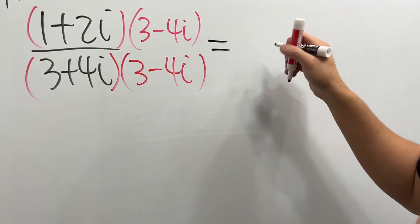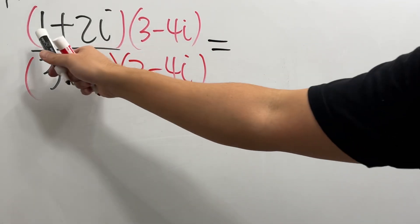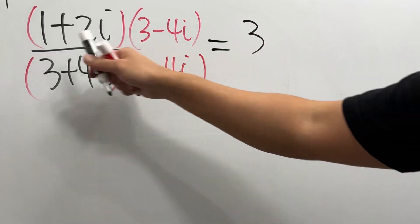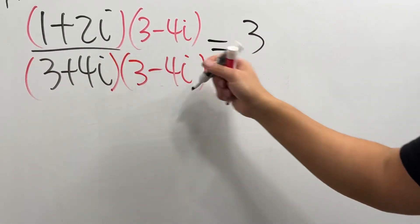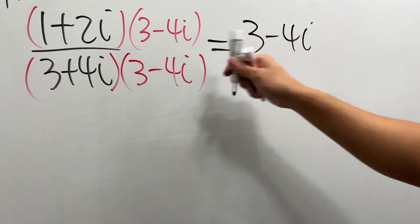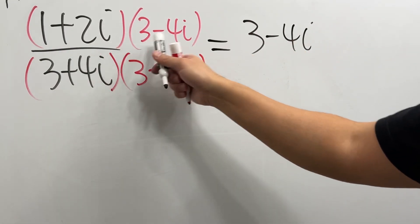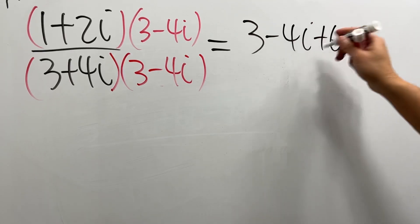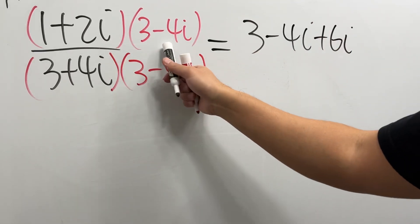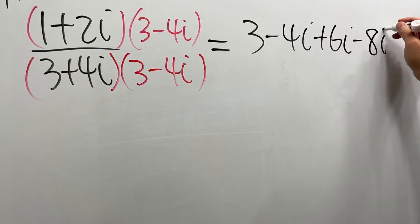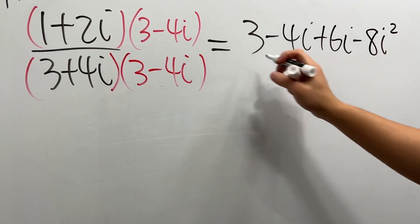Now we are just going to multiply this out. 1 times 3, we get 3. 1 times negative 4i is minus 4i. And then this times that is plus 6i. And then this times that is minus 8i squared.